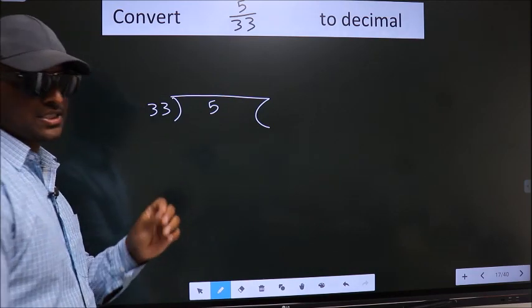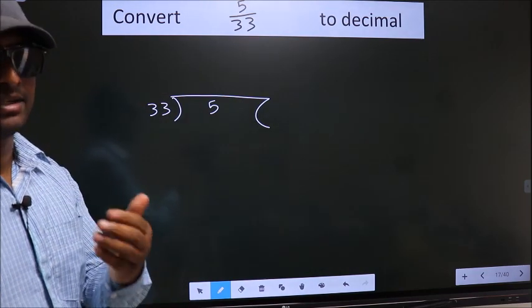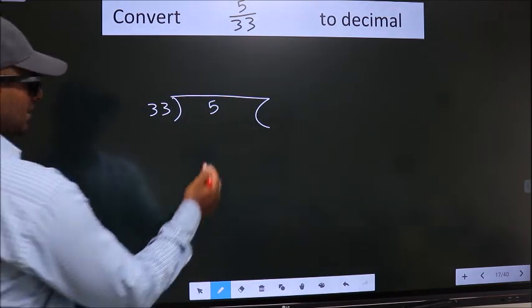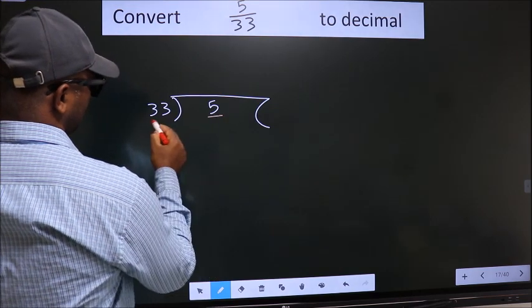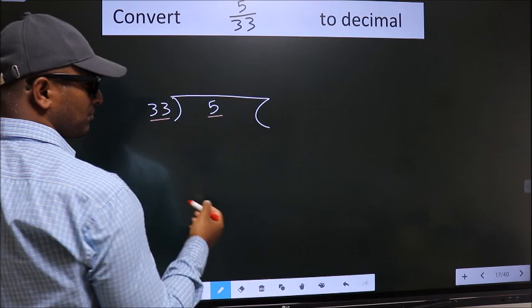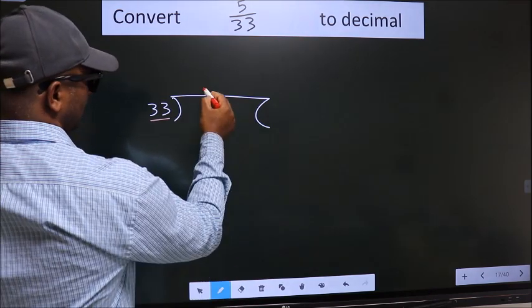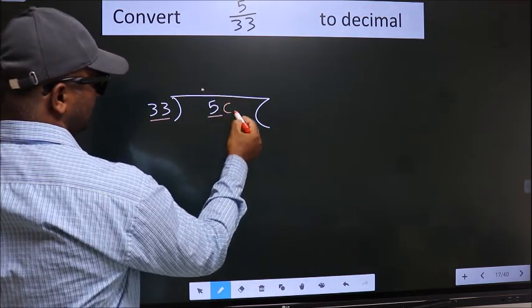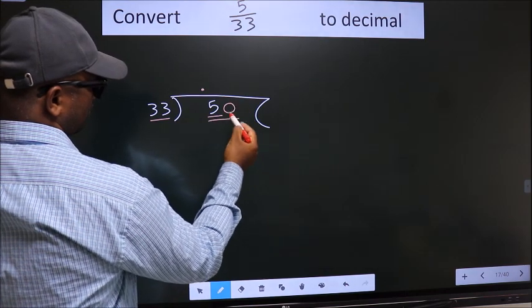This is your step 1. Next, here we have 5. Here, 33. 5 is smaller than 33. So what we do is, we should put a dot and take 0 here. So, 50.